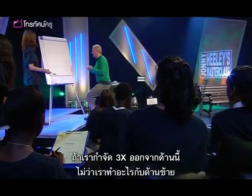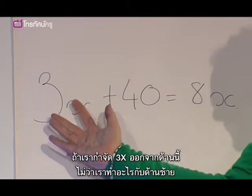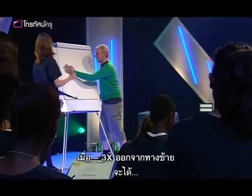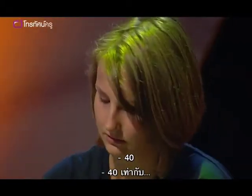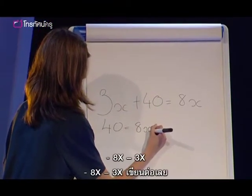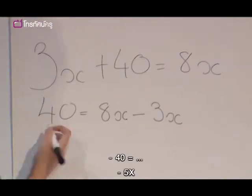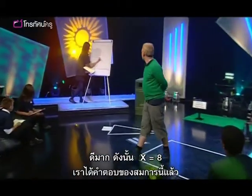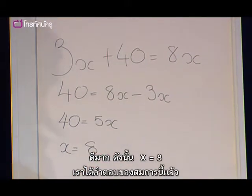So if we take 3X away from this side, whatever we do to the left-hand side, we must do to the right-hand side. So take away 3X on the left-hand side — what's left? 40. Equals 8X minus 3X. So 40 equals 5X. Therefore X equals 8. We have a solution to this equation.